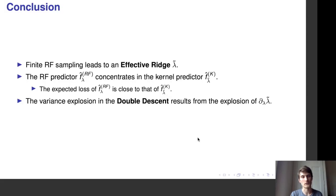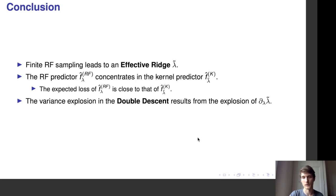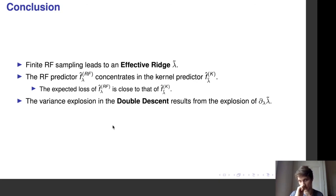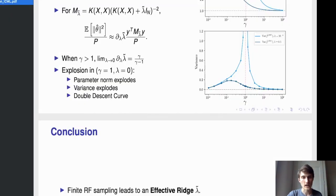In summary, we showed the implicit regularization of random features: the concentration of the random feature predictor around the kernel predictor with the effective ridge λ̃, leading to similarity between the expected loss of random features and the loss of kernel methods. We also showed that the double descent curve can be understood in terms of the derivative of the effective ridge. Thank you.